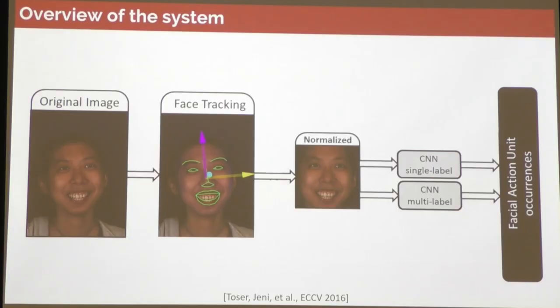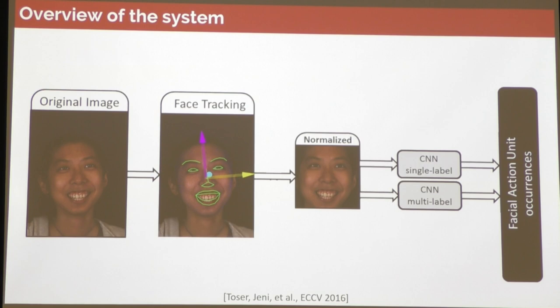We want to train a detector that can do the FACS coding for us. Starting from an original image, we do 3D tracking, normalize the image to a canonical coordinate system, and currently use a deep CNN method. I compared a single and a multi-label solution, predicting labels for the facial action units. It was a relatively small network — I tried five and seven layer configurations. The input image was normalized to 256x256, and the loss function worked on single-label or multi-label prediction.